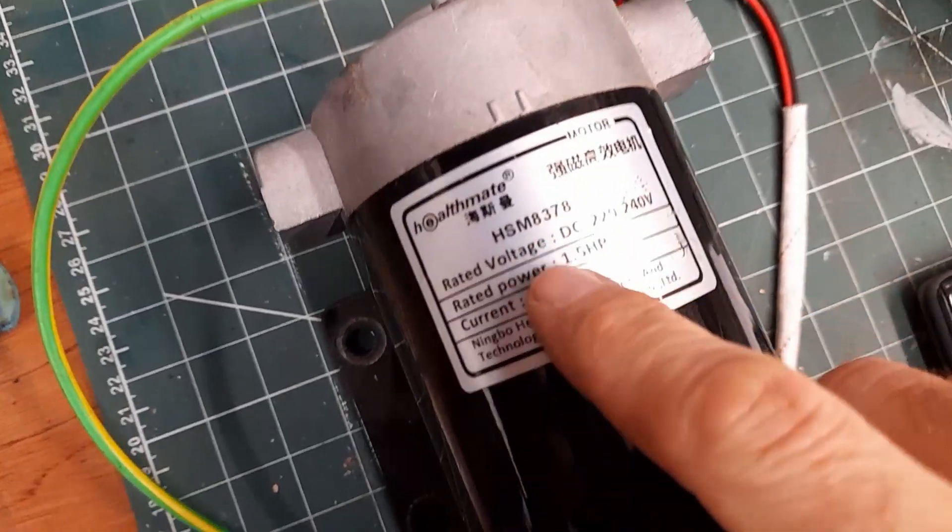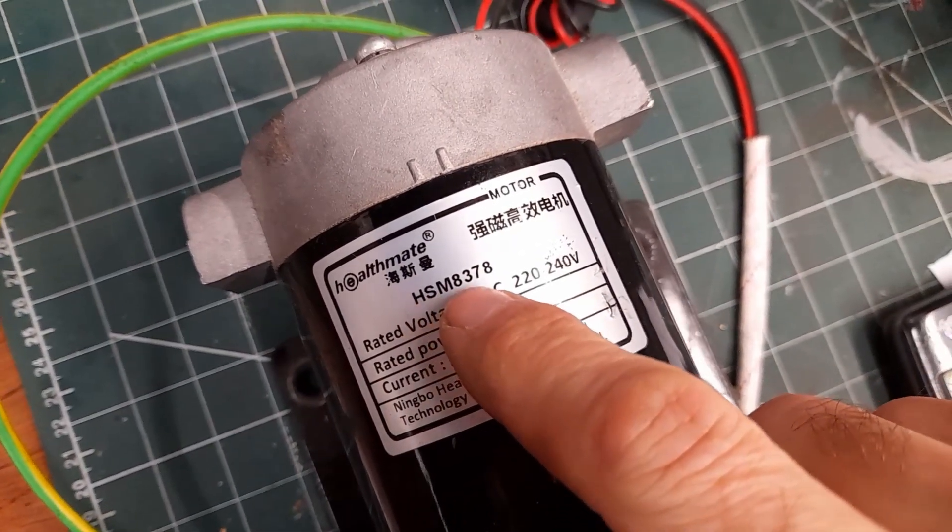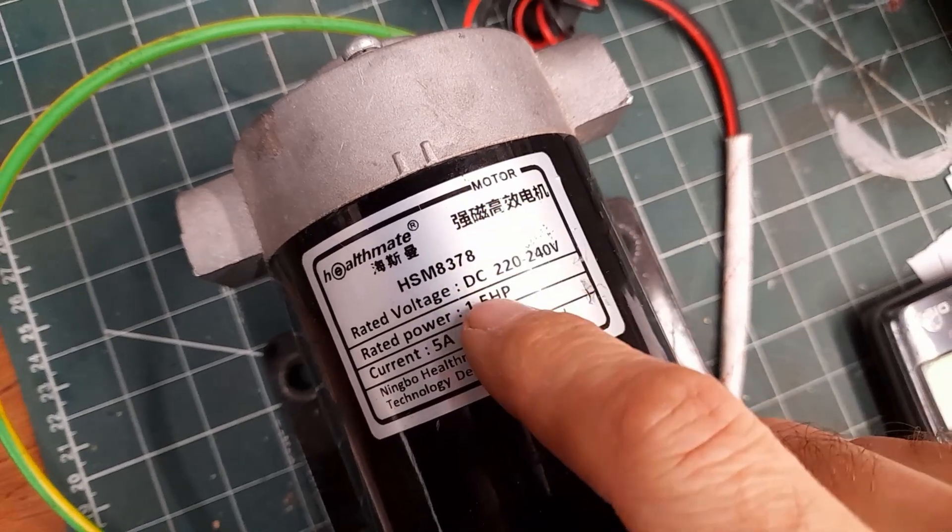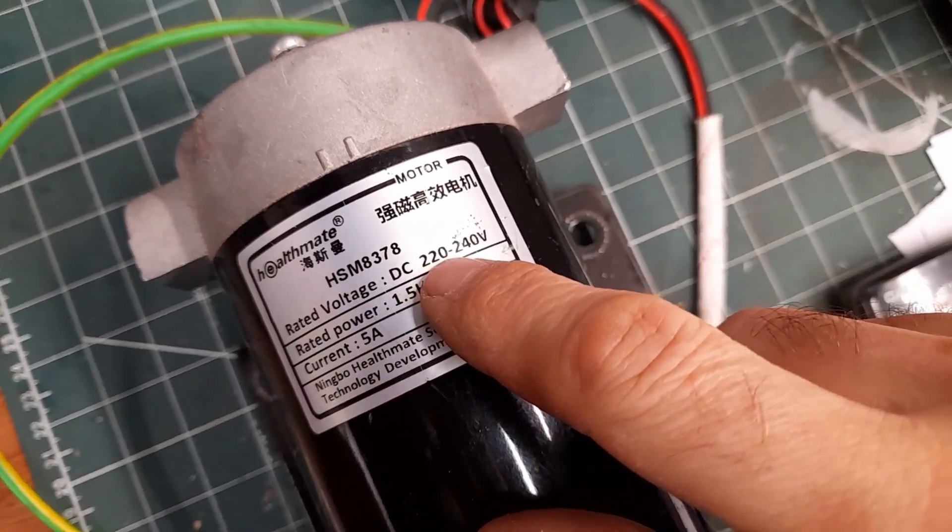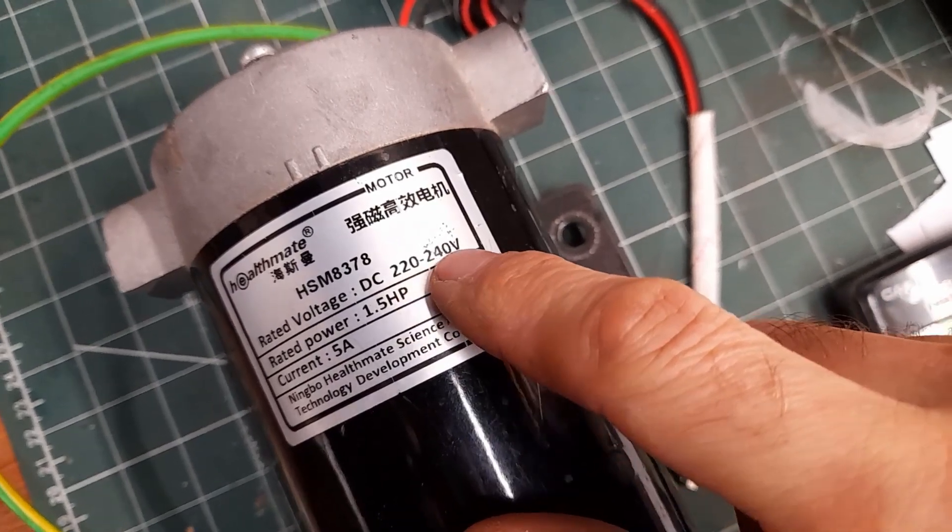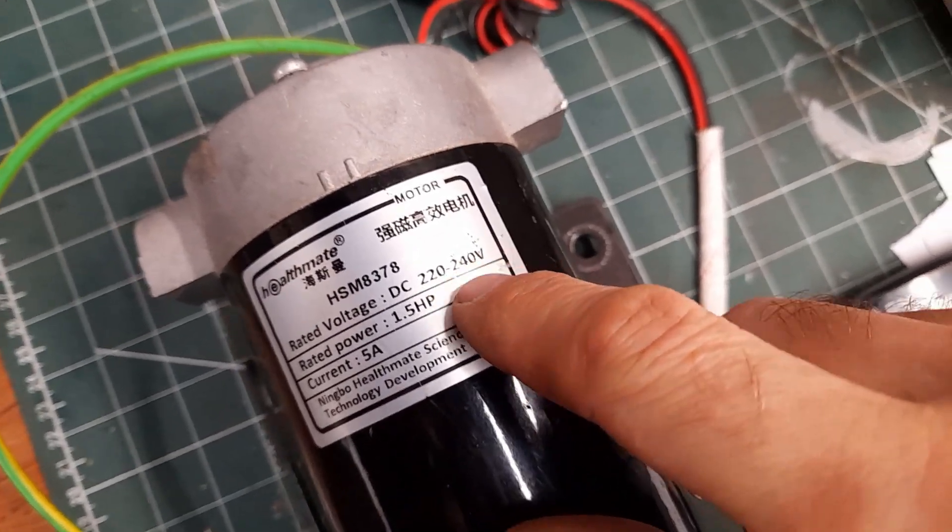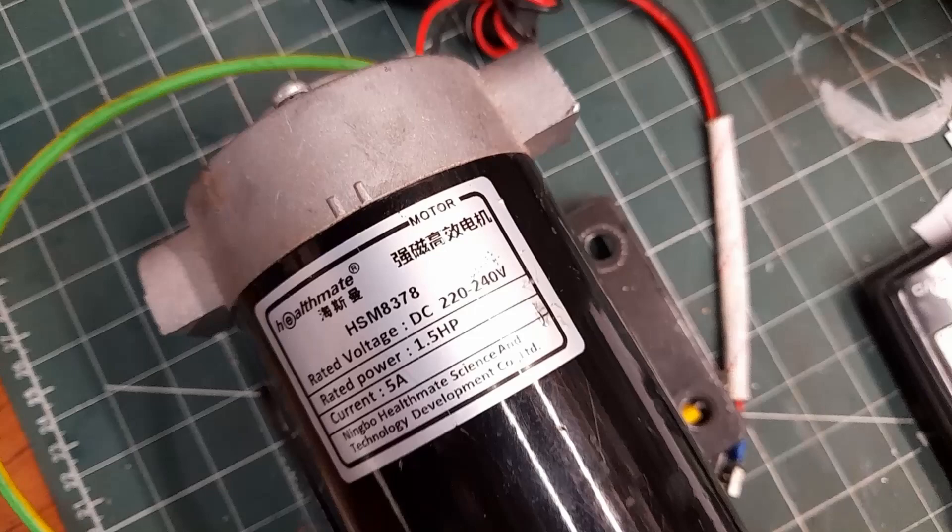We're just going to have a quick look at this motor then. It's an HSM8378 but before I really get started with the video can I just point out that the rated voltage is DC 220 to 240 volts so this is most definitely not the sort of motor for a student project.